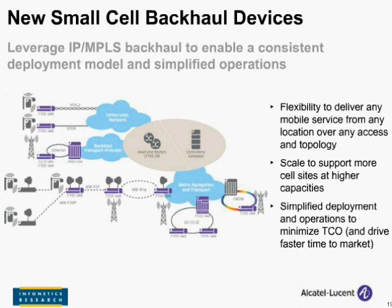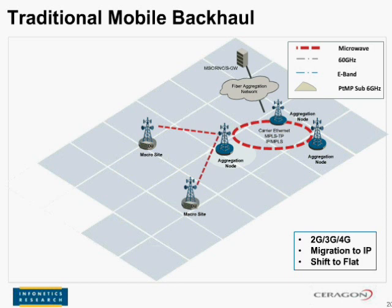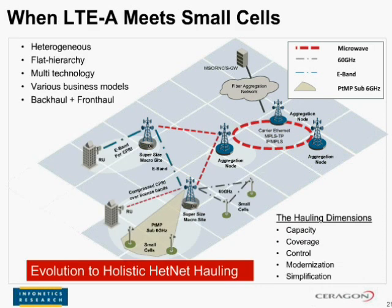Thanks very much, Heidi. I'm going to turn to Ran now. Traditional backhaul topologies designed for LTE support all radio technologies — 2G, 3G, and 4G — moving towards a flat all-IP network concept with a clear hierarchy of access backhaul and aggregation backhaul. When LTE Advanced meets small cells, a few changes occur simultaneously. With the introduction of HetNets, what we might see in a single network is diverse solutions both on the access side and the backhaul side, including supersized macro cells, small cells, and distributed cells.